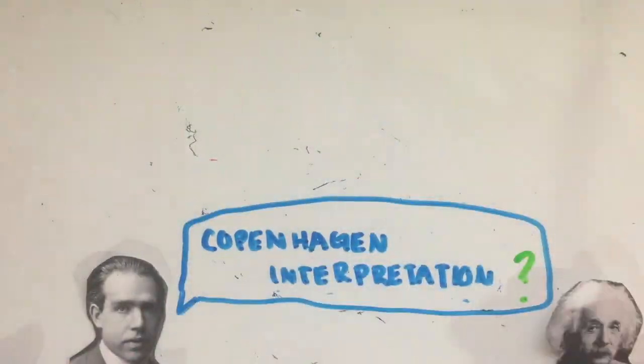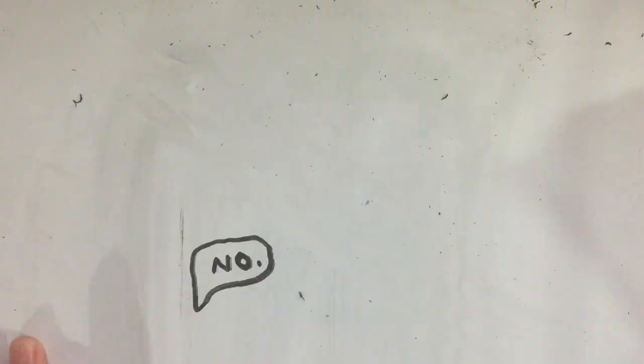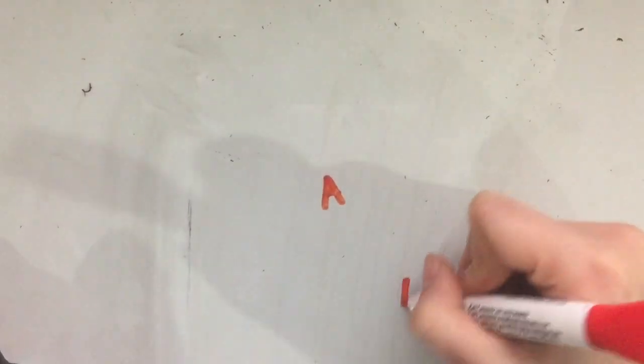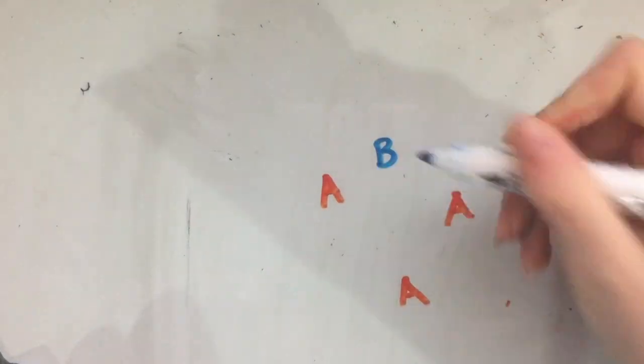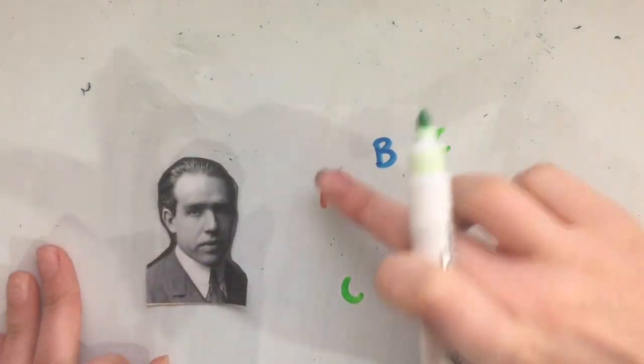Bohr was most excited to share this idea with Albert Einstein, as Einstein did not believe in what Bohr was saying at all. What Bohr was saying was that a particle could exist in multiple states at once, and the act of observing or measuring the particle would cause it to choose only one state.